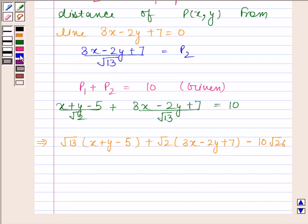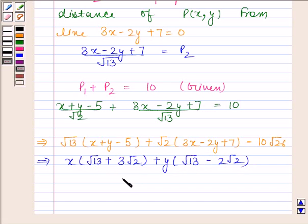This simplifies to: x(√13 + 3√2) + y(√13 - 2√2) - 5√13 + 7√2 - 10√26 = 0.